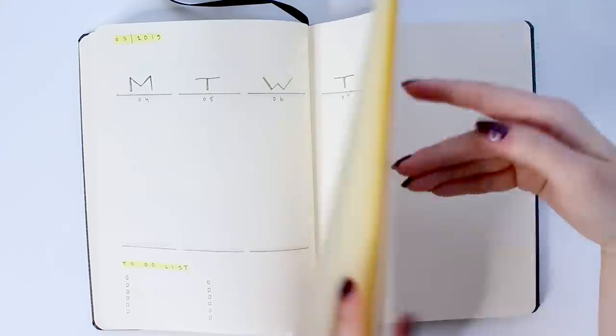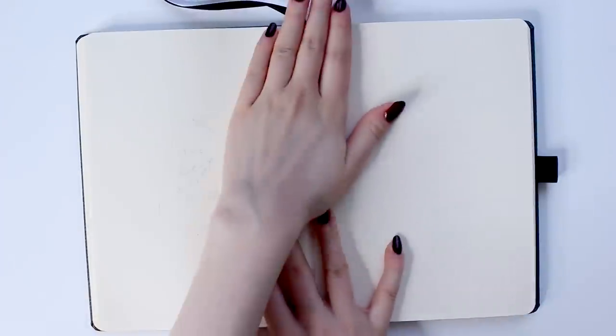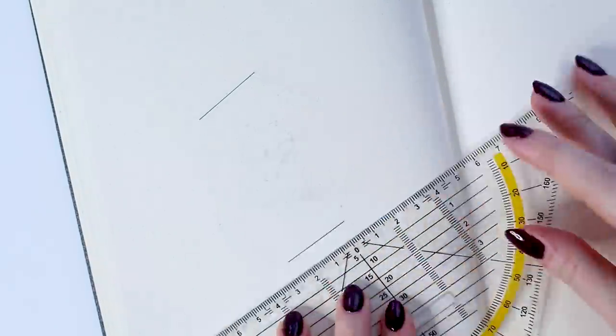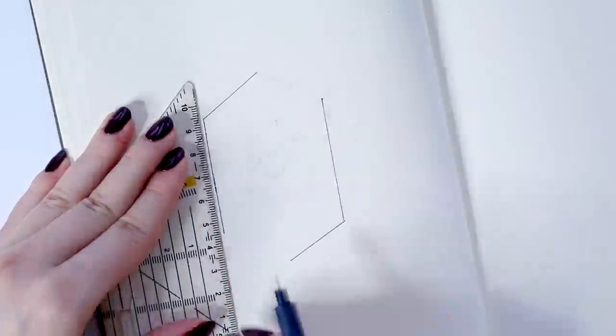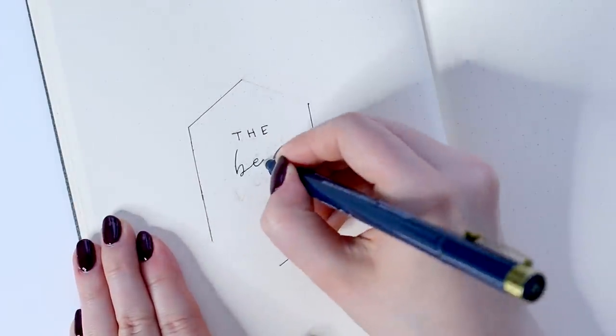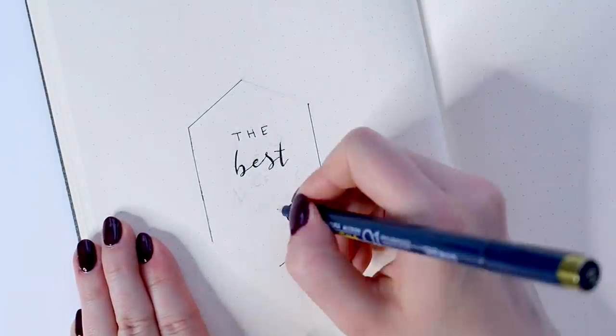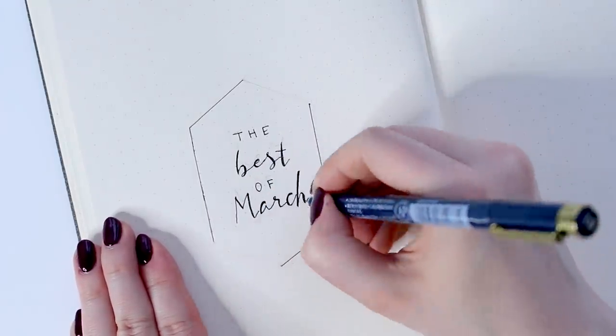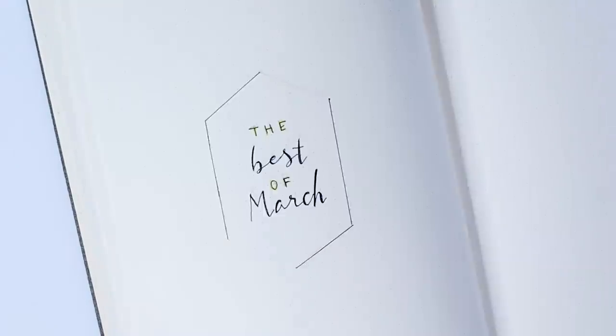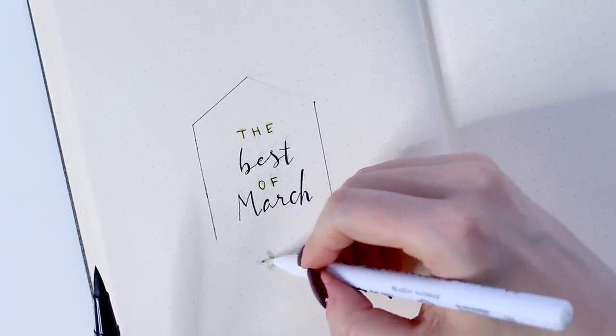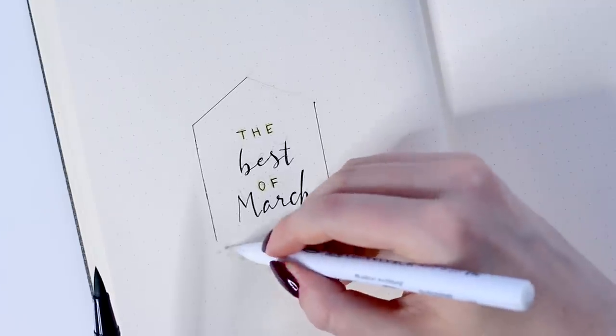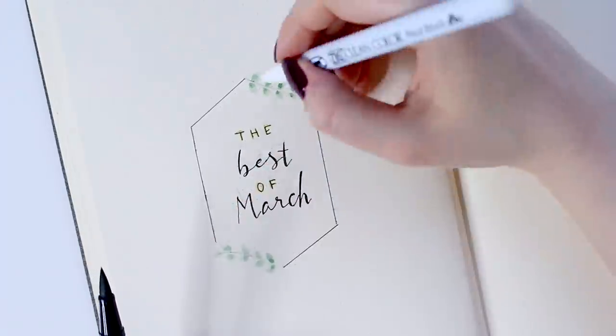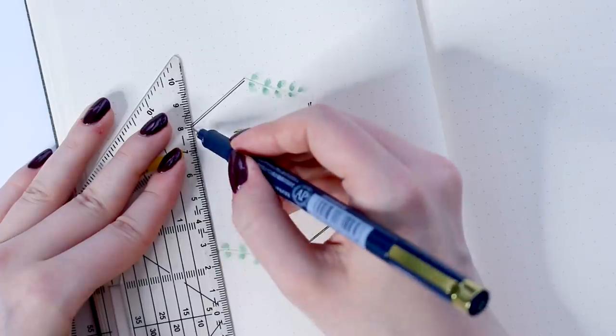But then lastly, I will still set up my March review page, where I can have a quick recap of the month. First, I'll have this page for the highlights of March. So I hope this page will be filled with all the best moments and memories I'll have. And I used this kind of similar border style that I had in my monthly overview page.